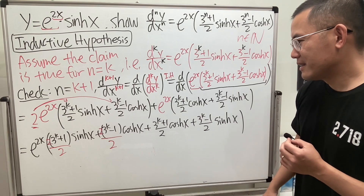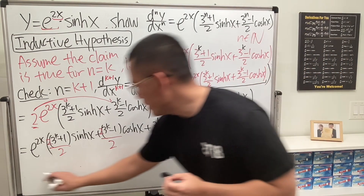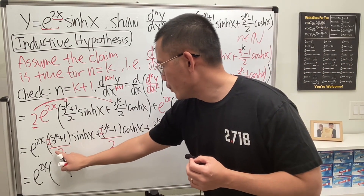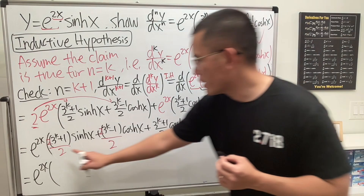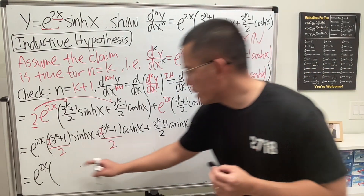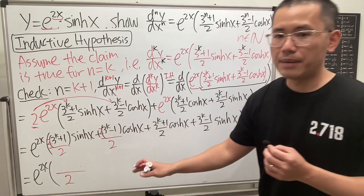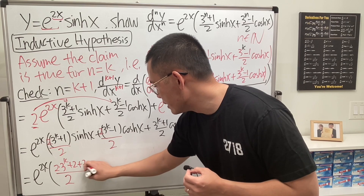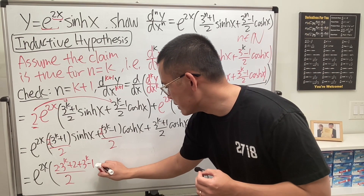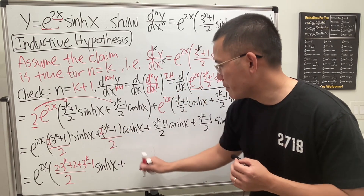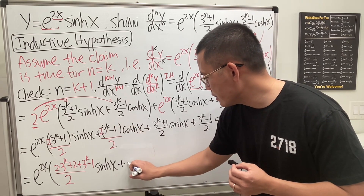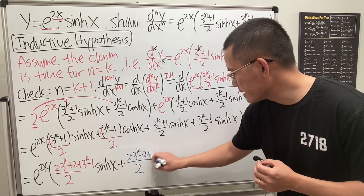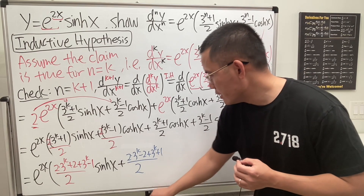Combining the sinh terms with denominator 2: we get 2 times 3 to the k plus 3 to the (k−1) all over 2. For the cosh terms we get 2 times 3 to the (k−1) plus 3 to the (k+1)/2. I'll do the sinh part in red and the cosh part in blue to keep track.